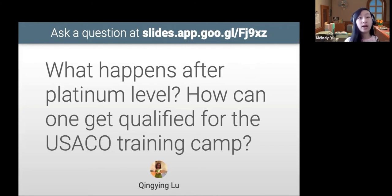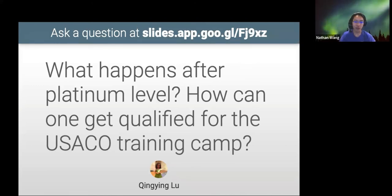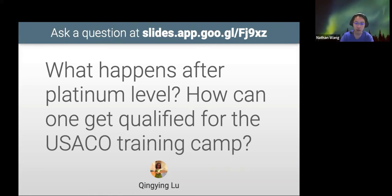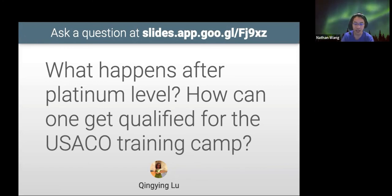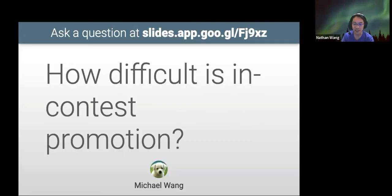What happens after the platinum level and how can one get qualified for the training camp? After platinum, you just do all four contests and the USACO coaching staff will look at your contest performance and choose roughly the top 26 people to join the USACO training camp. The training camp is split into two groups: first timers — who are just there to learn and don't compete for an IOI spot — and second timers or repeat campers, who actually do contests to compete to see who will represent the US at the IOI. Qualifying as a first time camper is significantly easier than as a second time camper.